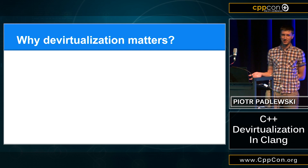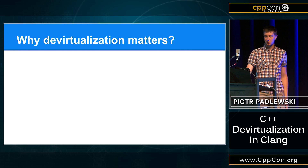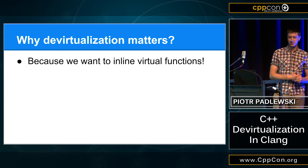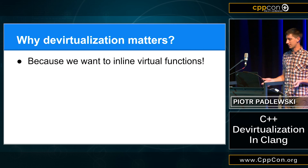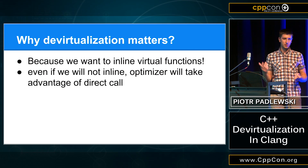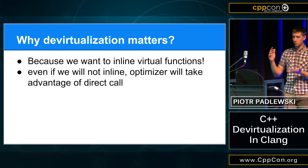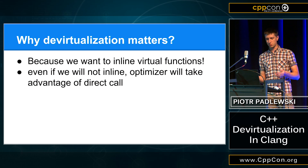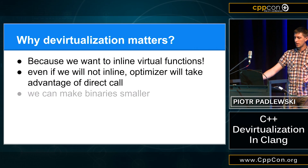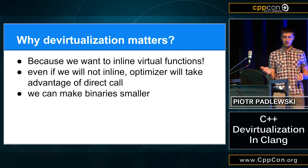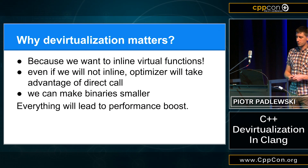So why does devirtualization matter? The most important thing about devirtualization is that we want to inline virtual functions. And if we don't know what function will be called, then of course we cannot inline it. There are other things: if we devirtualize the function and we know that it's too big to inline, then it's much better to have a direct call instead of a virtual dispatch. Also, if we devirtualize better, we will make binaries smaller. And all these things will lead to a performance boost.